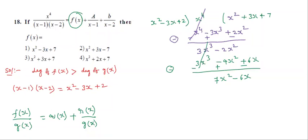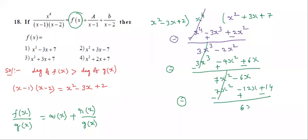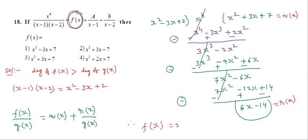Multiply with 7: 7·(x²-3x+2) = 7x² - 21x + 14. Subtract. 7x² cancels. Remaining: 21x - 6x = 15x, then minus 14. So the remainder R(x) is 15x - 14. The quotient Q(x) is x² + 3x + 7. They are asking only quotient, not a or b values. So the third option is correct.